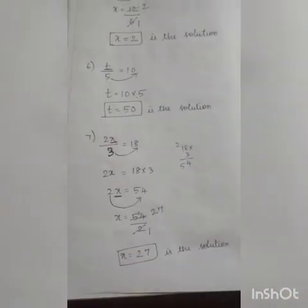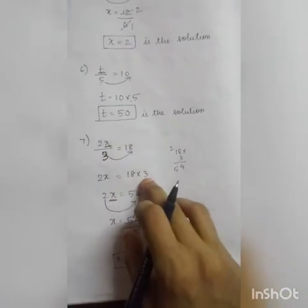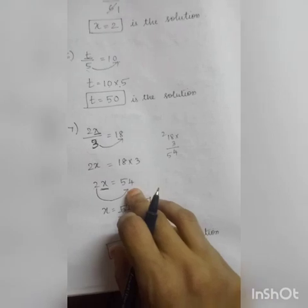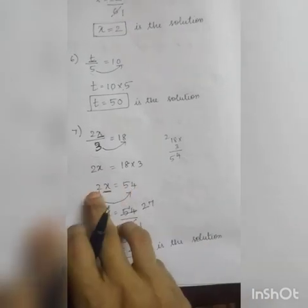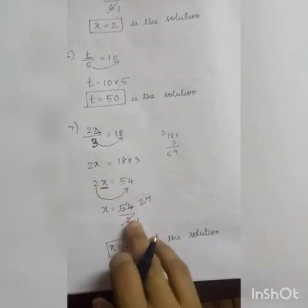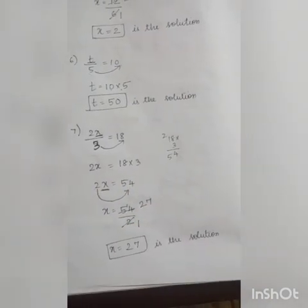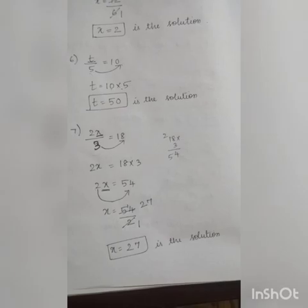Just to recap: we multiplied 18 by 3 first to get 54, then divided by 2 to get 27. So x equals 27 is the solution of this equation.